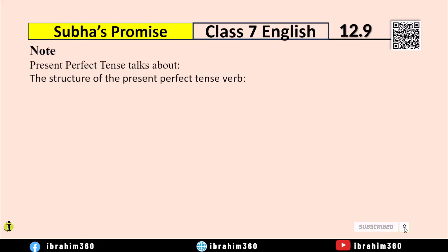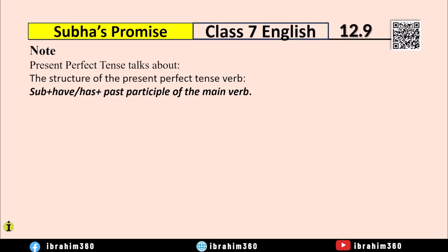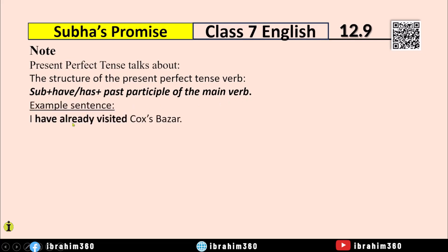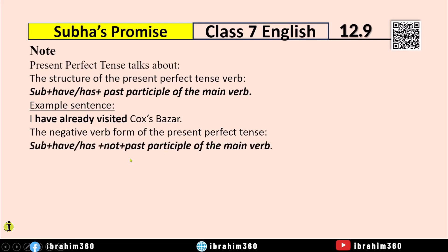Now let's talk about the structure of Present Perfect Tense. The structure is: Subject + have/has + past participle of the main verb. For example: 'I have already visited' — where 'have' is the auxiliary verb and 'visited' is the past participle. For the negative form, 'not' is added after 'have' or 'has,' followed by the past participle of the main verb.